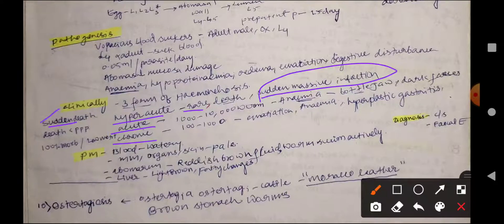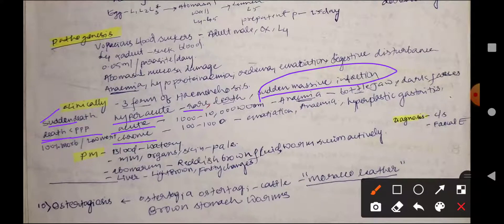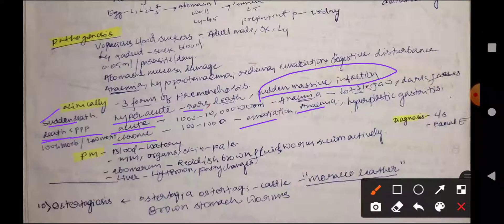In the case of acute, death occurs before the prepatent period. In the case of chronic, there is emaciation, anemia, and hyperplastic gastritis.